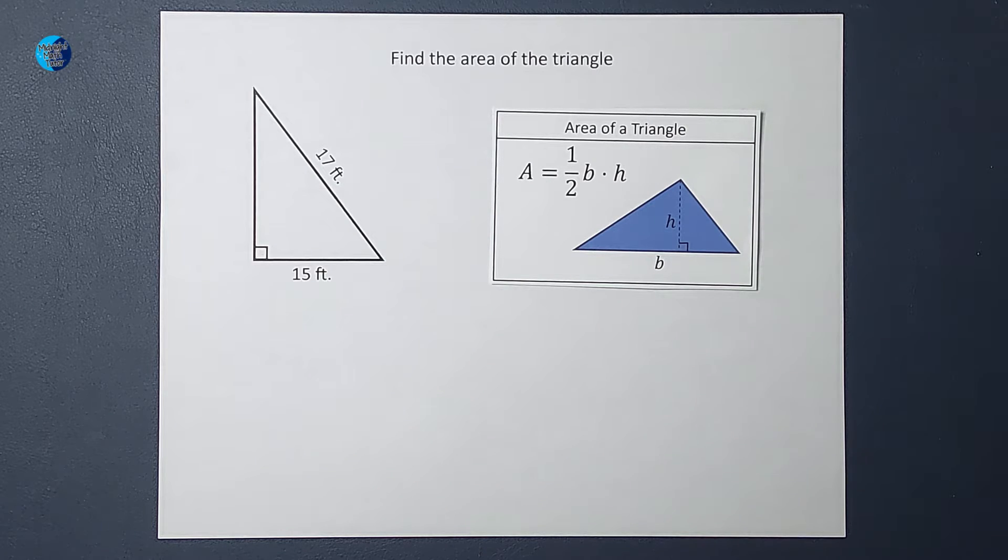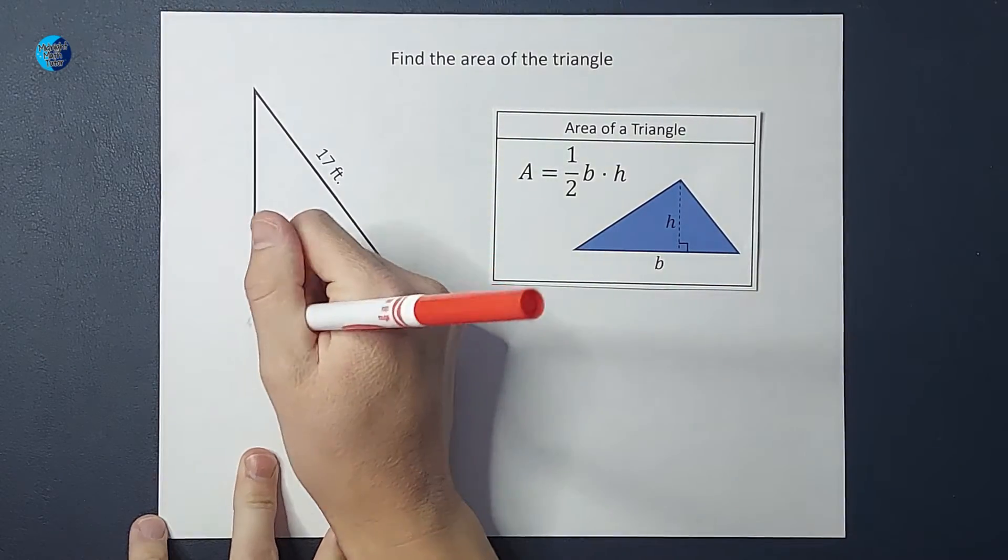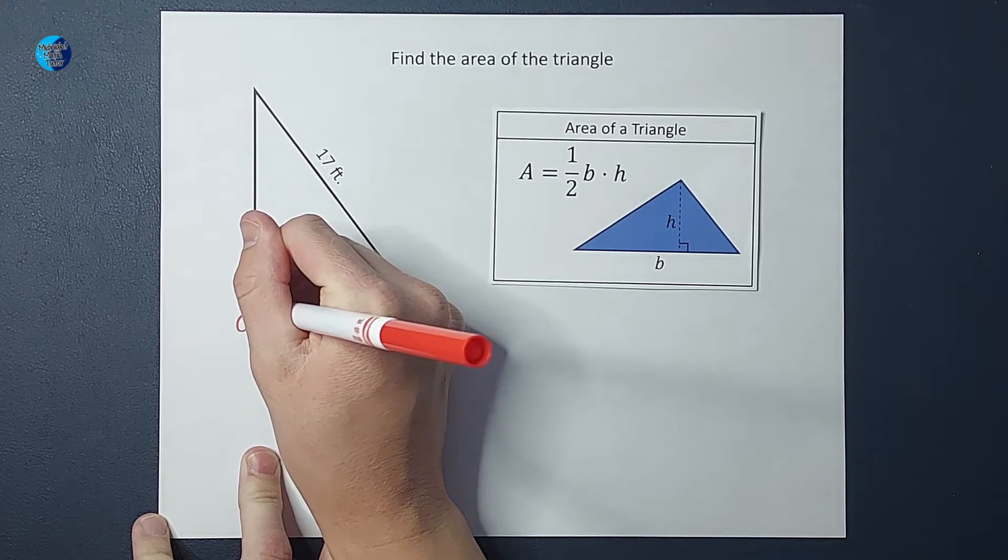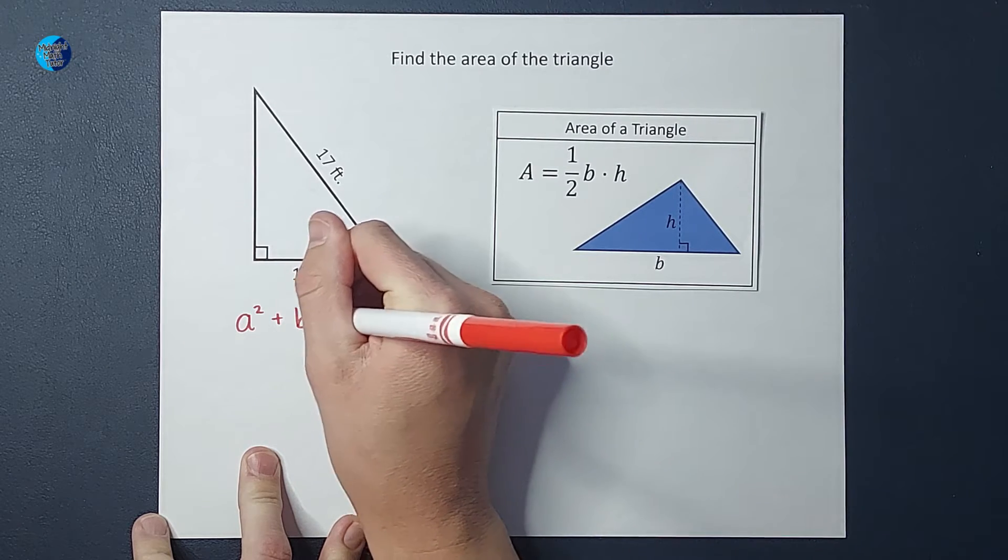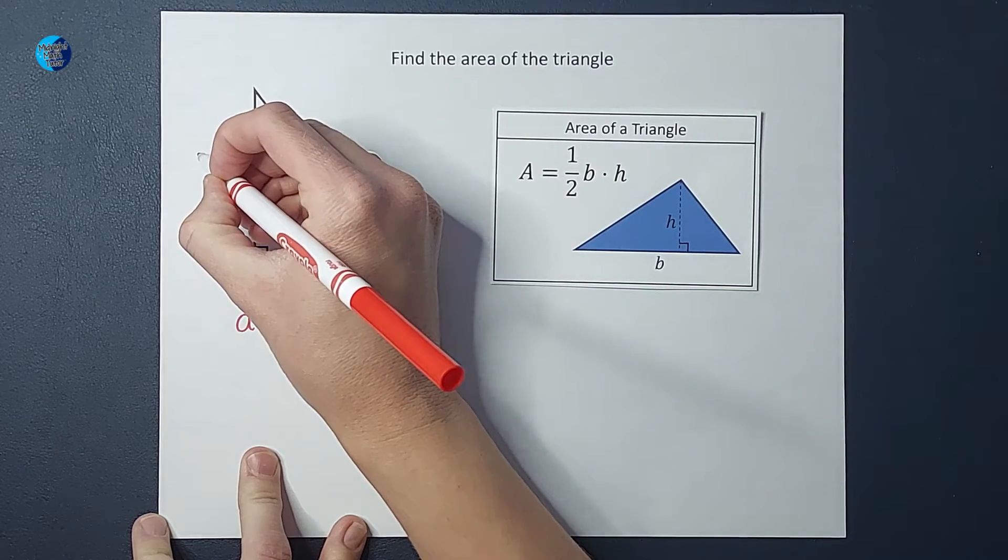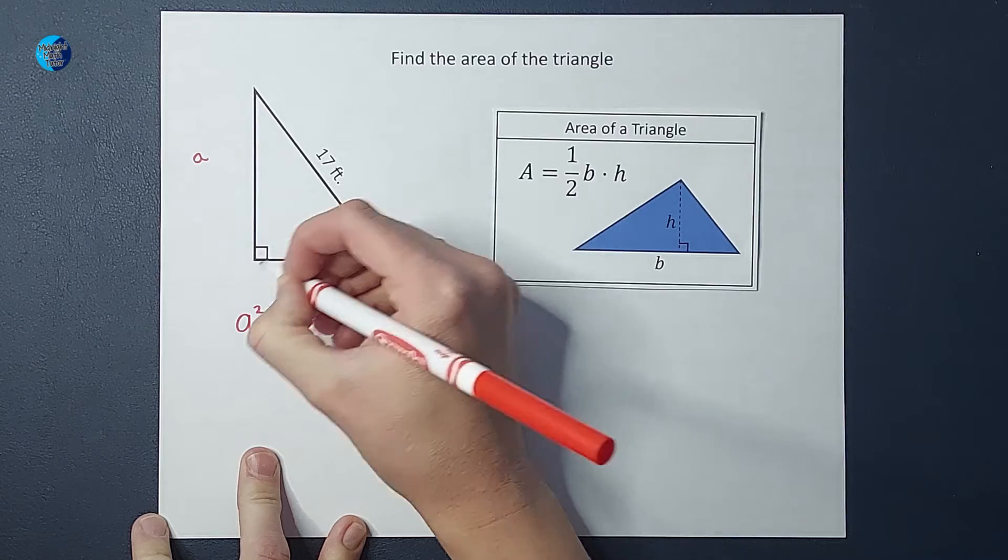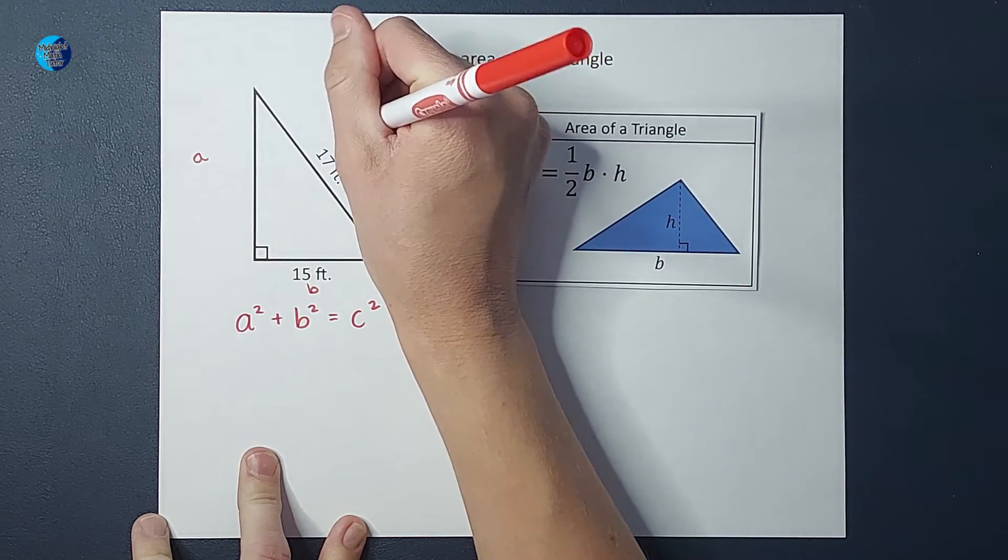Well, guess what? We can use our dear friend, the Pythagorean theorem, right? This is a right triangle, so I can use that. So my Pythagorean theorem tells me that a squared plus b squared equals c squared, right? The sides are the a and b, and my hypotenuse, the one across from the right angle, is c.